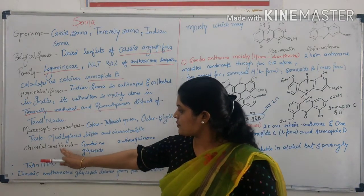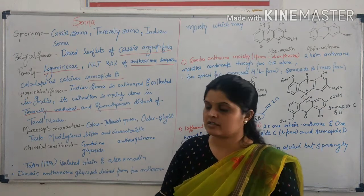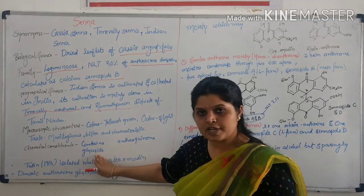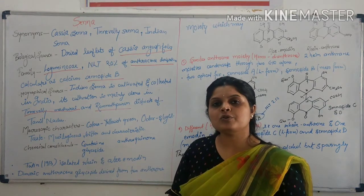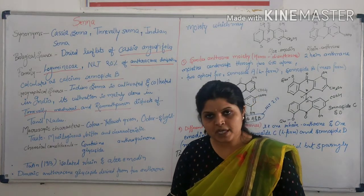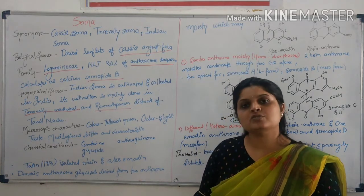The chemical constituents of Senna drug: It contains anthroquinone glycosides, mainly anthroquinone like sennoside A, sennoside B, sennoside C, sennoside D.